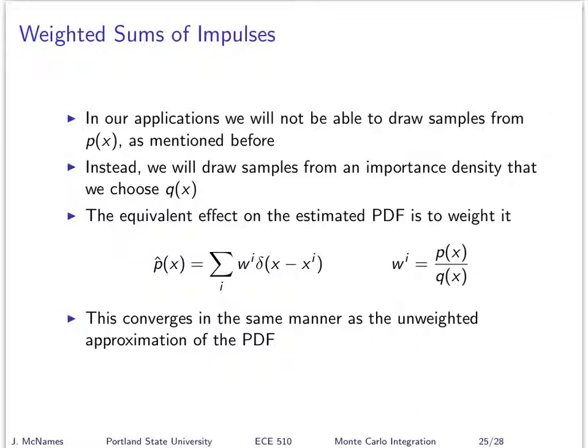So the other wrinkle was that we're going to have to weight these impulse functions. And so we draw our samples from the random number generator that we choose, from the importance density that we design. We make up that. And we draw the samples from that. But then we've got to weight them by the ratio of p(x) over q(x) in order for it to be a representation of the PDF that we want. We really want to approximate this p(x). And if these samples are drawn from something else, it's not a good representation unless we scale them by that ratio.